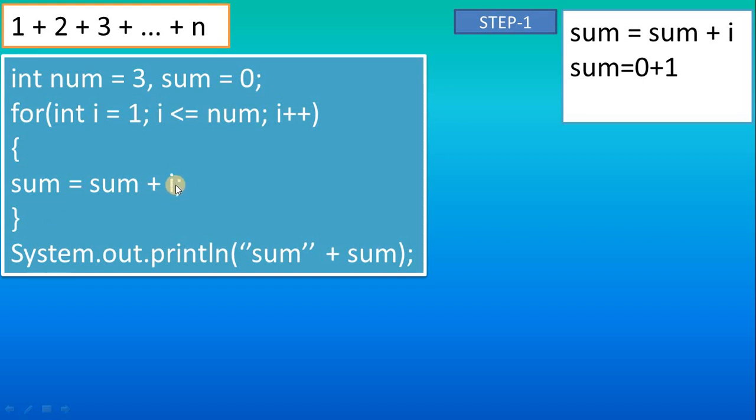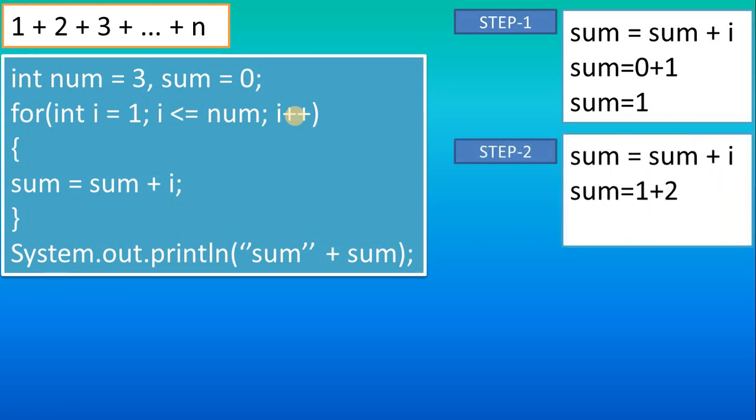In step 1, what will happen? Sum = sum + i. That is our logic. So sum = 0 because the sum value is initialized with 0, and i value is 1, so the final value of sum will become 1. Then the i value is incremented by 1, so i becomes 2.